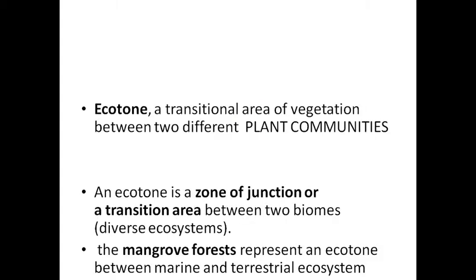Ecotone is a word solely applicable for the plant community or vegetation community. It is a transitional area of vegetation between two different plant communities — a zone of junction or transduction between two biomes. A biome is a diverse biological ecosystem. For example, the mangrove forest of Sundarbans is an example of ecotone because it lies in the transitional field between the marine ecosystem and the terrestrial ecosystem, which is why the mangrove forest is called a transitional ecosystem, known as ecotone.